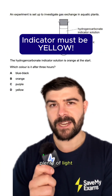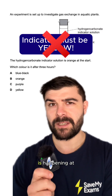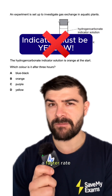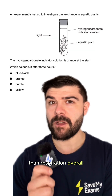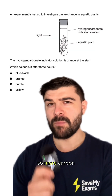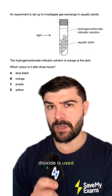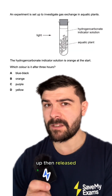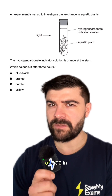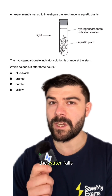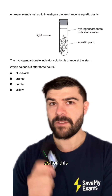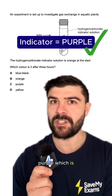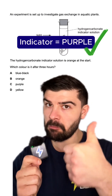But because there's plenty of light, photosynthesis is happening at a faster rate than respiration overall. So more carbon dioxide is used up than released, and the concentration of CO2 in the water falls. So for this question, the indicator goes purple, which is the correct answer.